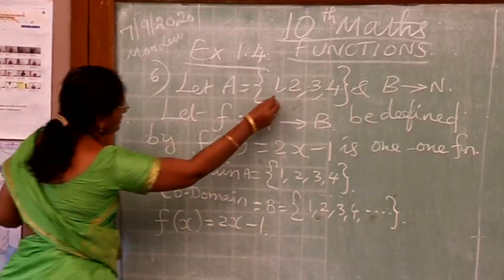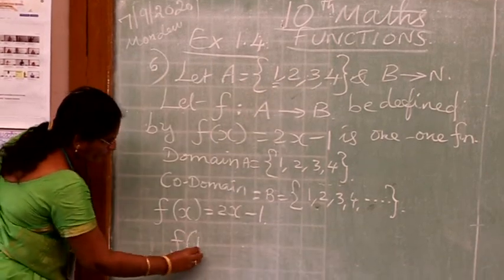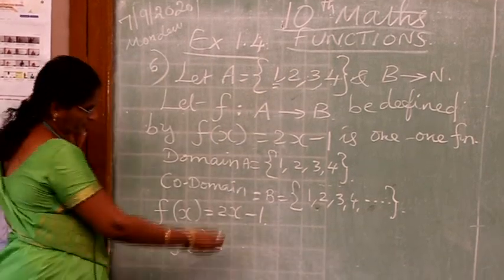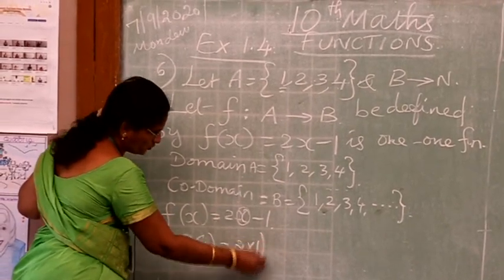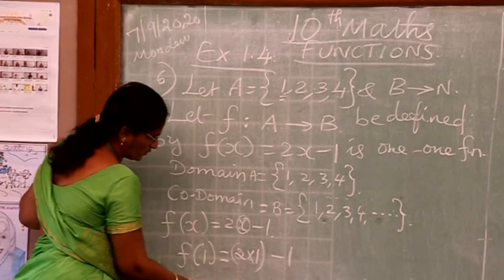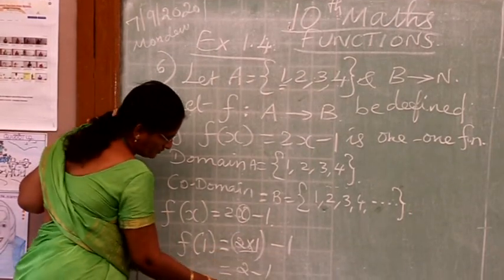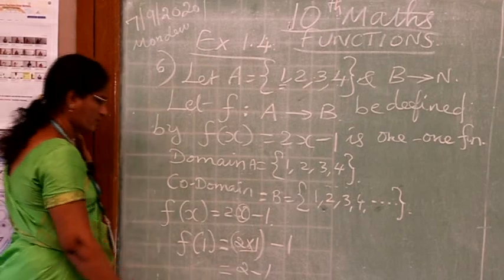So first number is 1, so F of 1 we are going to find. F of 1 instead of x we are going to substitute this 1, then 2 times 1 minus 1, 2 times 1 is 2, minus 1 is 1. Therefore 1 comma 1.